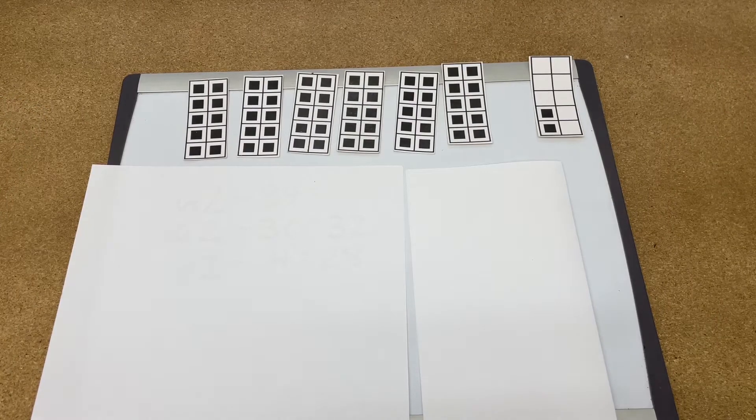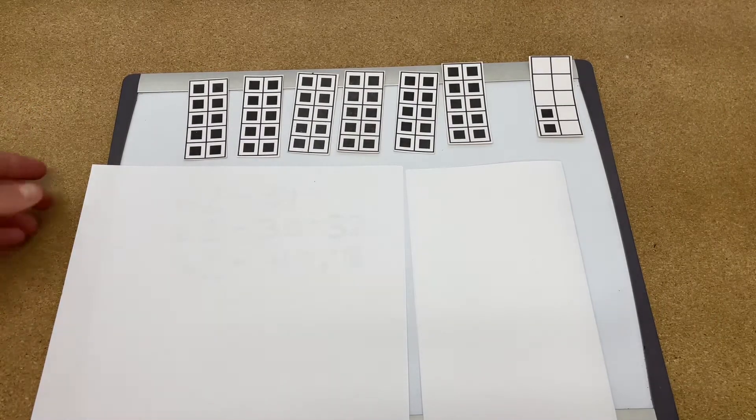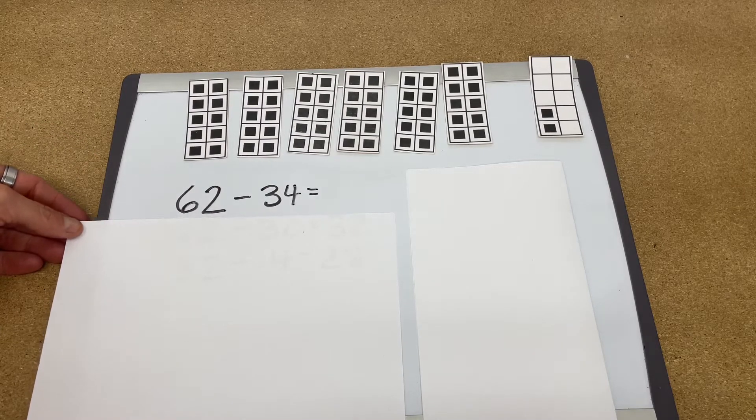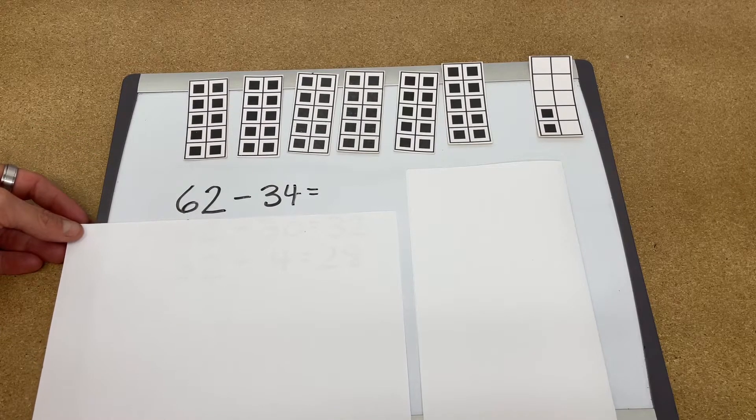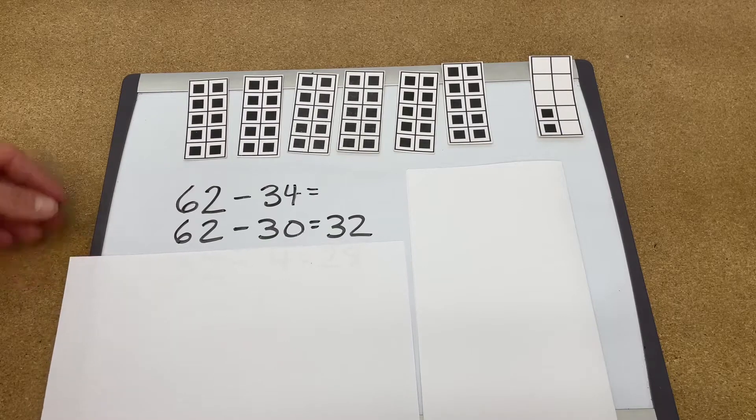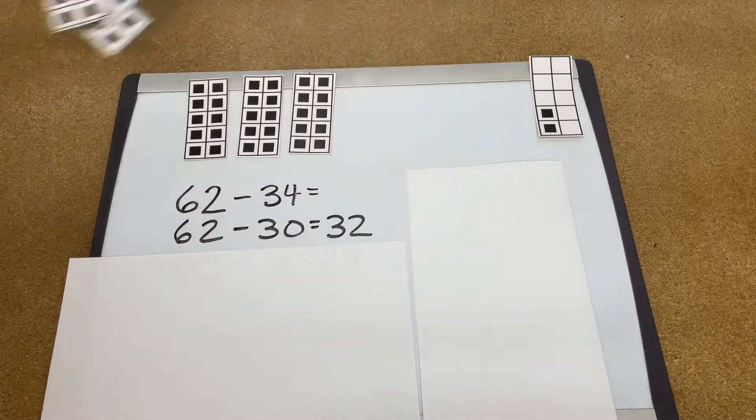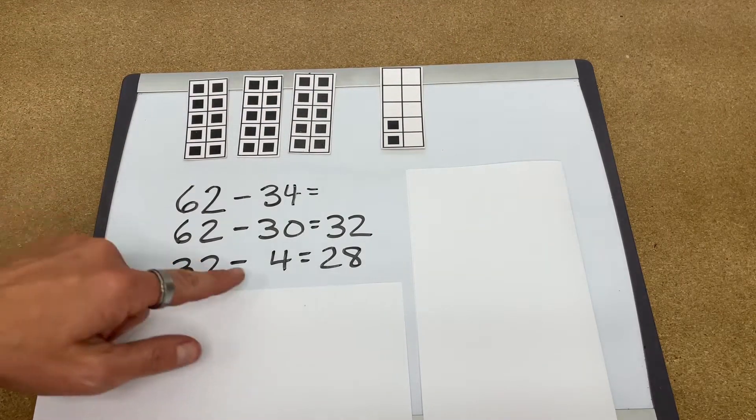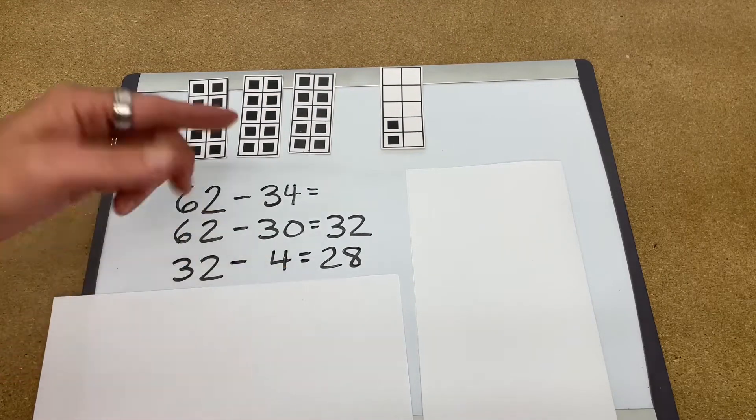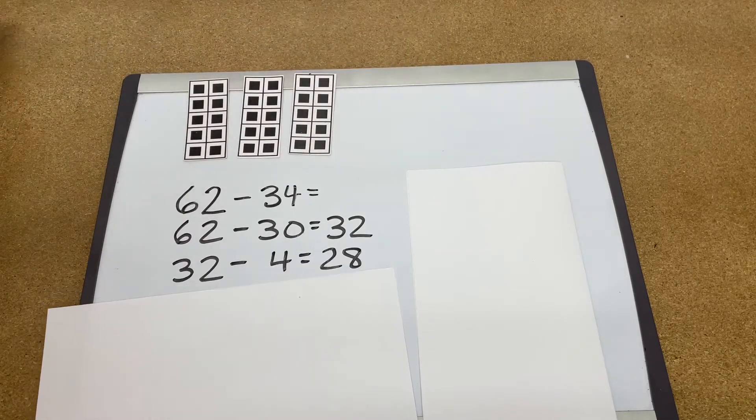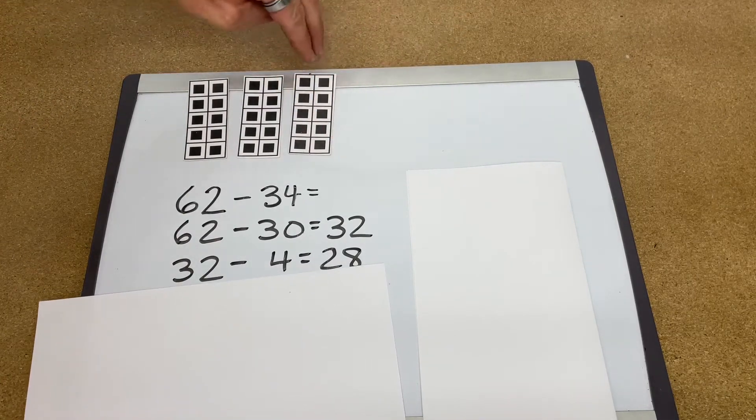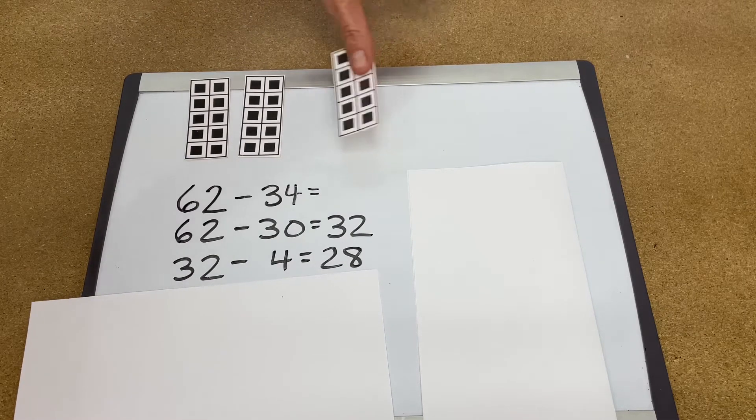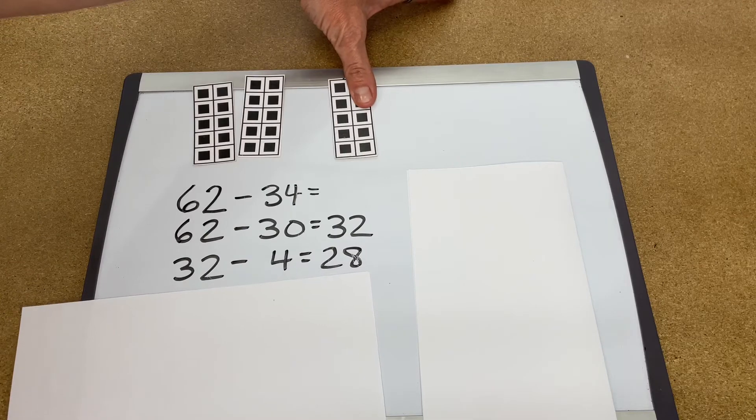But what happens if we need to borrow from a ten, such as a question like this? 62 take away 34. So we would do the same thing as before. 62 take away 30 is 32 left over. And then we take the 32 and we subtract 4. So we need to take away 4. We would hide 2 of those and how many are left? 28. We can see that there.